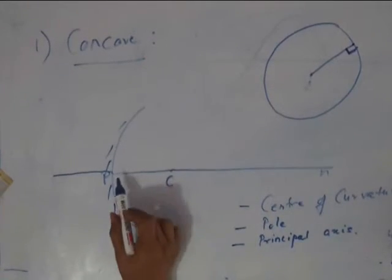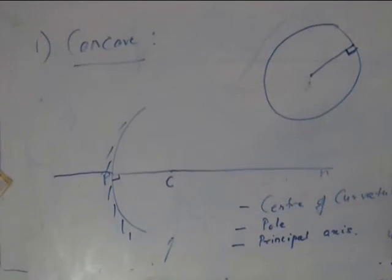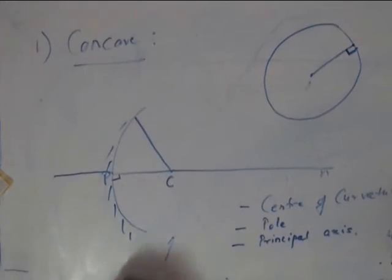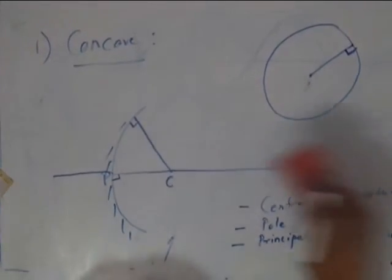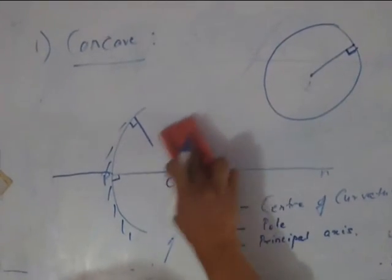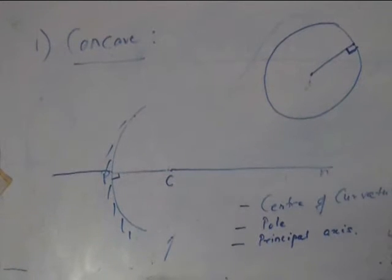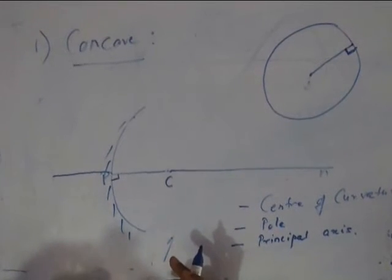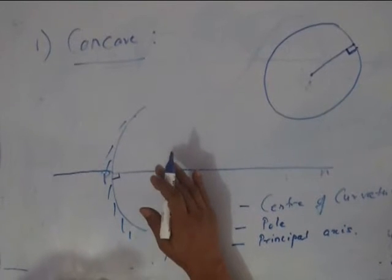Therefore, this line will be perpendicular to the mirror here. Similarly, I join any point on the circumference to the center of curvature, it will be 90 degrees at that point. Remember this. Now, normals are important because as you know, angle of incidence is drawn with the normal, angle of reflection is drawn with the normal and these two will be always equal in reflection. These laws will be followed. So these are the definitions and we will use these definitions.